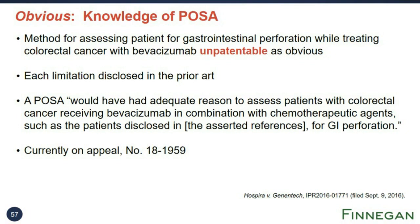Turning to Shana: how can a company identify patents associated with a particular biological product? If the company files an ABLA and engages in the patent dance, the reference product sponsor should be providing the company with a list of patents as part of the patent dance. If the company wants patent information before filing an ABLA, it is more complicated. The Purple Book in its current form does not include patent information like the Orange Book does for small molecule drugs. Figuring out what patents might be associated with a biologic requires a lot of patent searching and analysis, which can be challenging on both the legal and technical sides. The FDA has recently sought comment and hosted a public meeting on whether it should make changes to the Purple Book, including to include patent information.